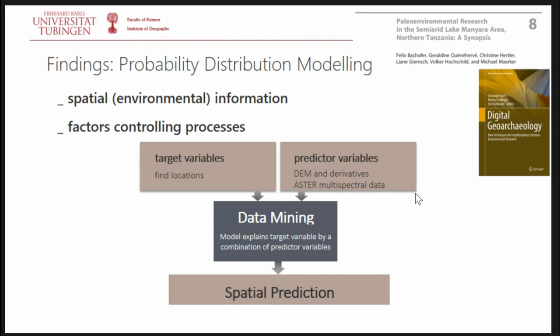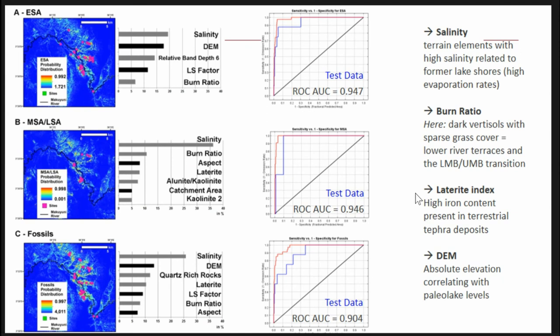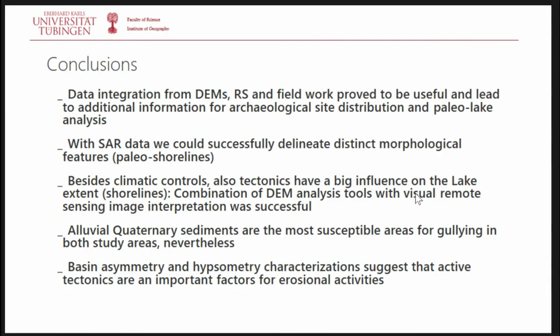The last thing I want to present is probability modeling for the archaeological findings. We did this with a data mining approach using MaxEnt analysis. You can see the Makayuni River and the early, middle, and late Stone Age and fossil locations shown in pink. We put all the data into the model and produced a probability map of the same local conditions — a high probability to also detect new remnants along the whitish areas. We got really good ROC curves for this. There are many promising spatial analyses to support archaeological work.